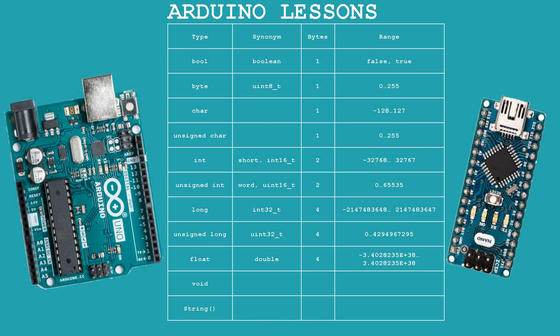Before using variables, objects and functions, we must first declare them in the program text so that the compiler allocates a separate place for them in memory cells. And in order for the compiler to know how much space to allocate in memory, you also need to specify the types of this data when declaring. Data types are also required by the compiler for the correct interpretation of expressions over them.